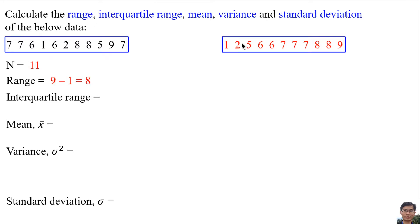Sort the data in ascending order. The interquartile range is the third quartile minus the first quartile. We need to find the median first. Median is the middle of the sorted data.